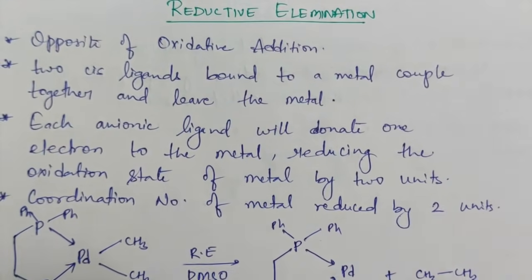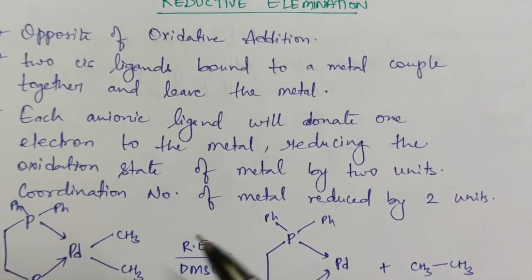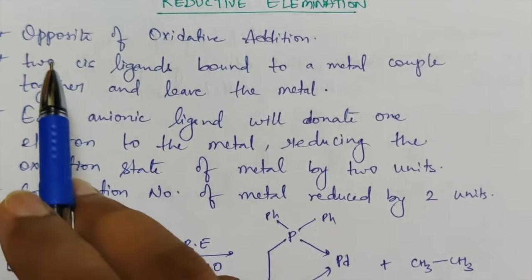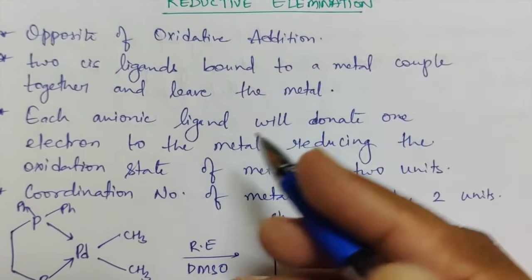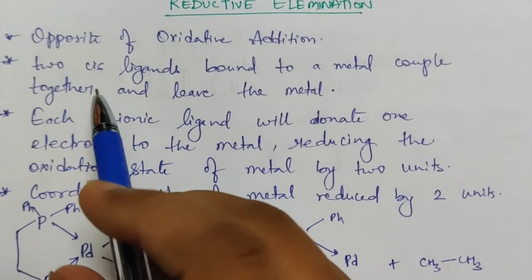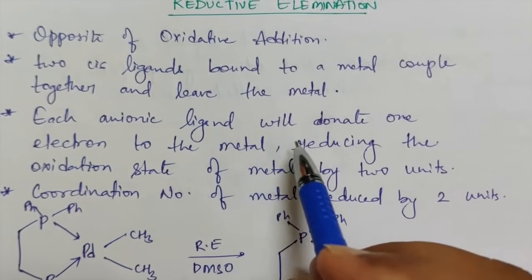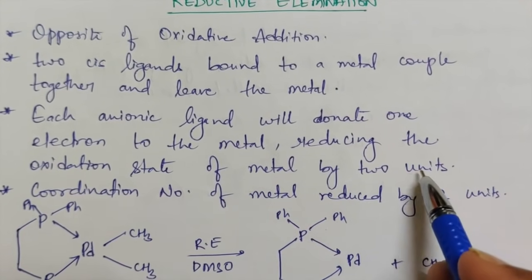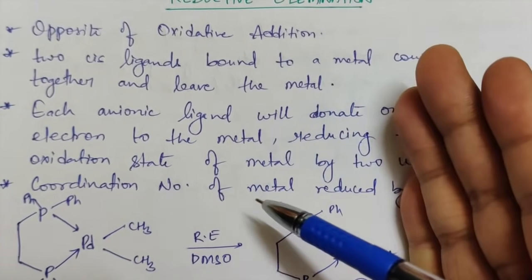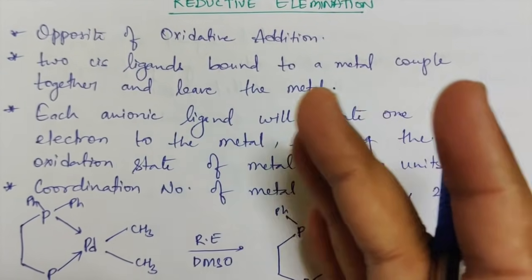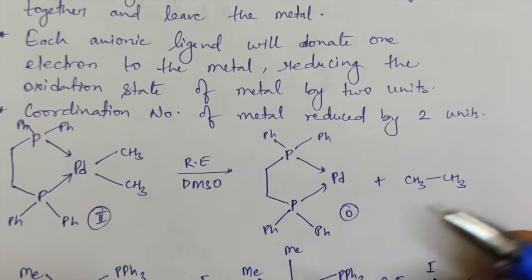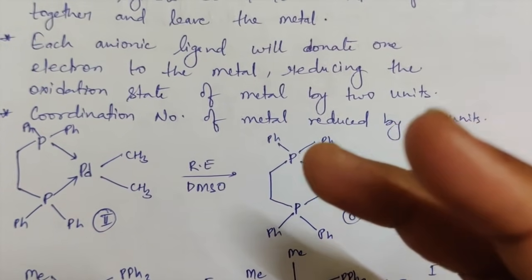The next mechanism is reductive elimination, which is generally the opposite of oxidative addition. What happens here is that two cis ligands bound to the metal couple together and leave the metal. The removal of ligands is done from the cis position. Each anionic ligand donates one electron to the metal, reducing the oxidation state of metal by two units. The coordination number of the metal is also reduced by two units as two ligands leave the coordination sphere.